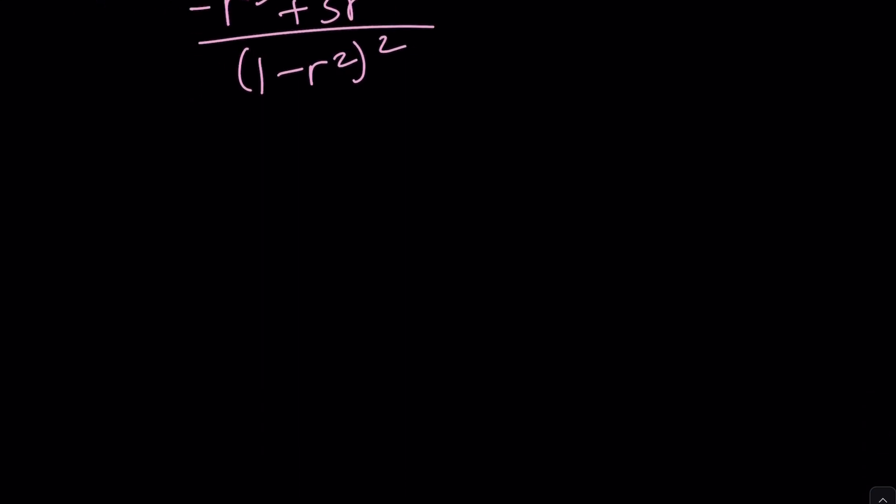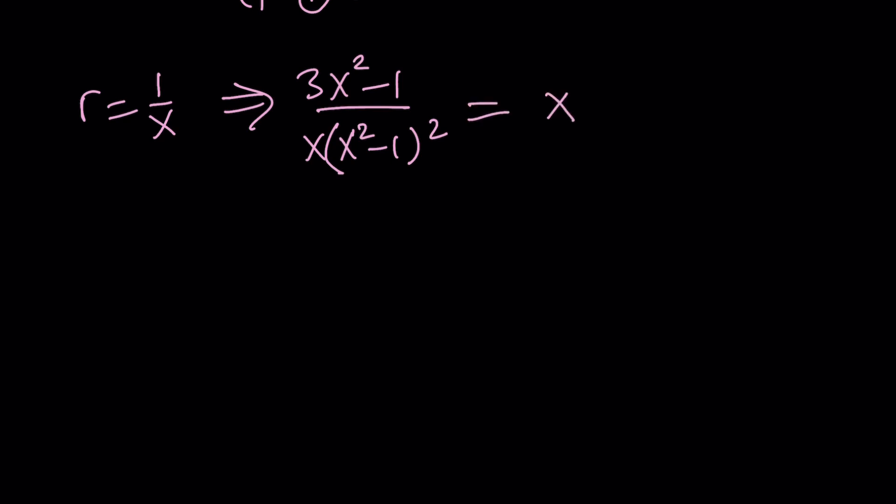But here's what we need to do. We need to replace r with 1 over x because we want our sum to be in the x form. So basically if you replace r with 1 over x this is what you should be getting. In the numerator 3x squared minus 1 and in the denominator we should have x times x squared minus 1 quantity squared. By the way that extra x in the denominator comes from the fact that when we replace r with 1 over x that's going to bring in an x squared in the denominator. And this is supposed to equal x. And if you do the math again, you get something like this which is super duper nice: x to the fourth minus 3x squared plus 1 equals 0.